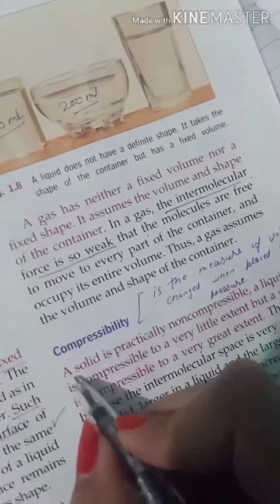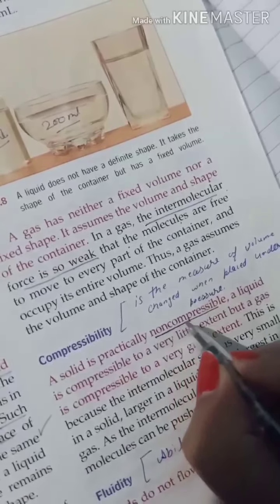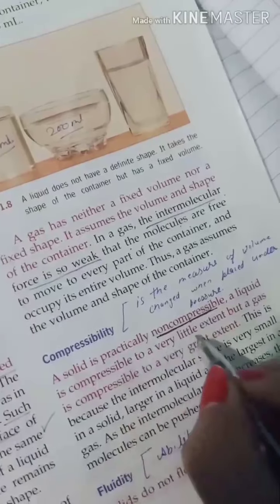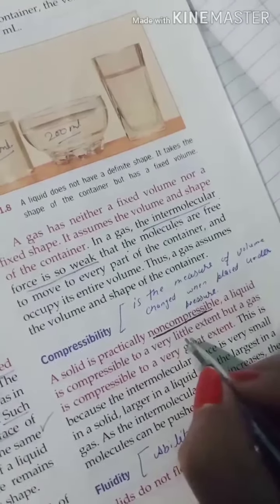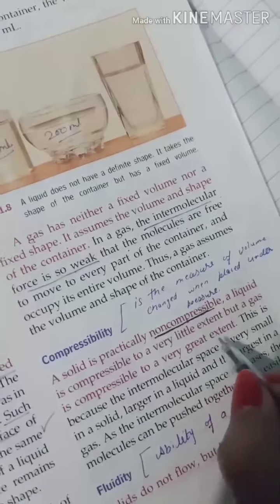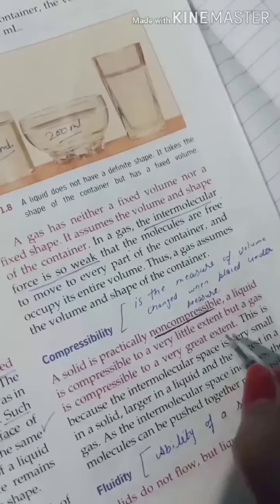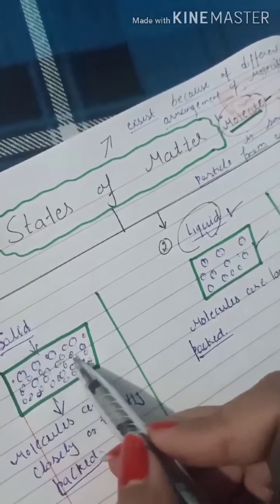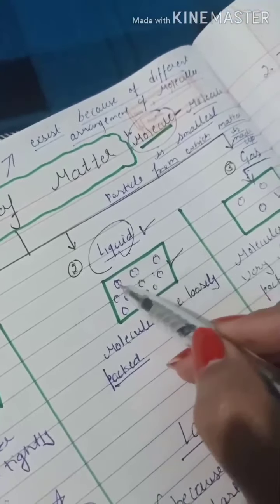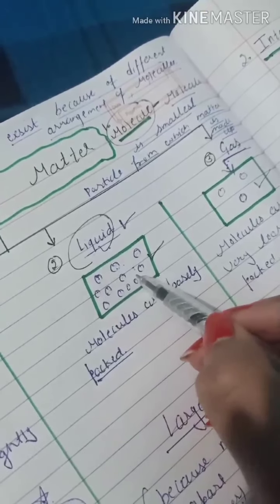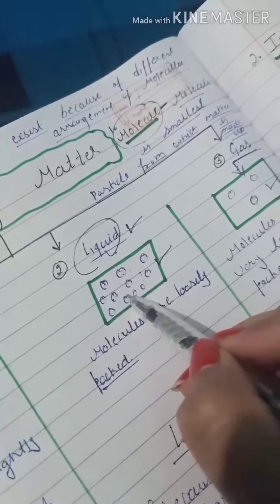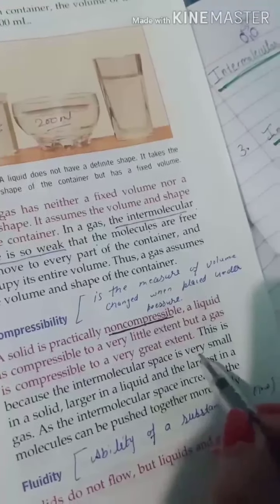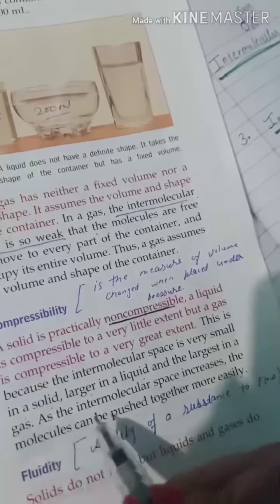A solid is practically non-compressible because there is no intermolecular space. A liquid is compressible to a very little extent because there is a little intermolecular space. In gas, compressibility is very great because there is a lot of intermolecular space. So intermolecular space is negligible in solid, small in liquid, and largest in gas. As intermolecular space increases, the molecules can be pushed together more easily.